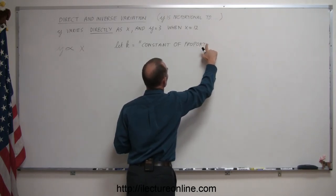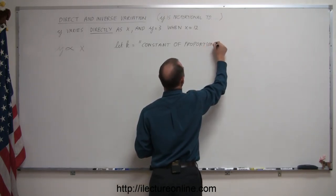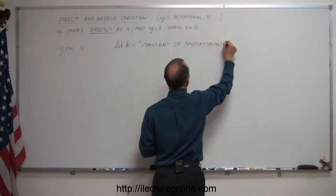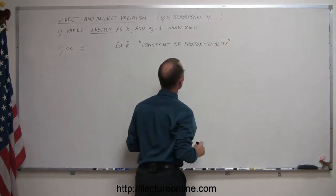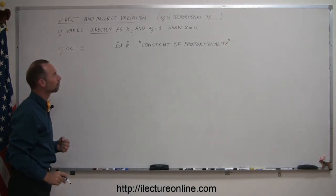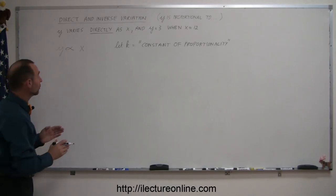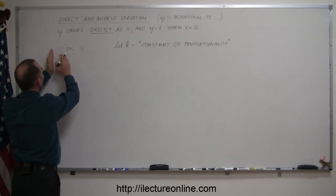And so in order to turn that into an equation, we have to use what we call a constant of proportionality, and we use typically the letter k for that. So let k equal the constant of proportionality.